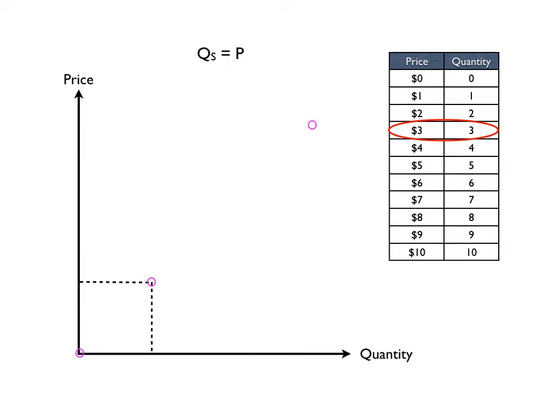At a price of three, three will be supplied, and at a price of eight, eight will be supplied. Then we can draw our supply curve through this. The supply curve is simply a graphical representation of how many units the supplier is willing to bring to the market at different prices.